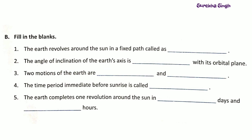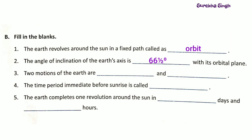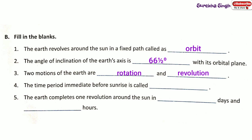Question B: Fill in the blanks. 1. The earth revolves around the sun in a fixed path called the orbit. 2. The angle of inclination of the earth's axis is 66.5 degrees with its orbital plane. 3. Two motions of the earth are rotation and revolution. 4. The time period immediately before sunrise is called dawn. 5. The earth completes one revolution around the sun in 365 days and 6 hours.